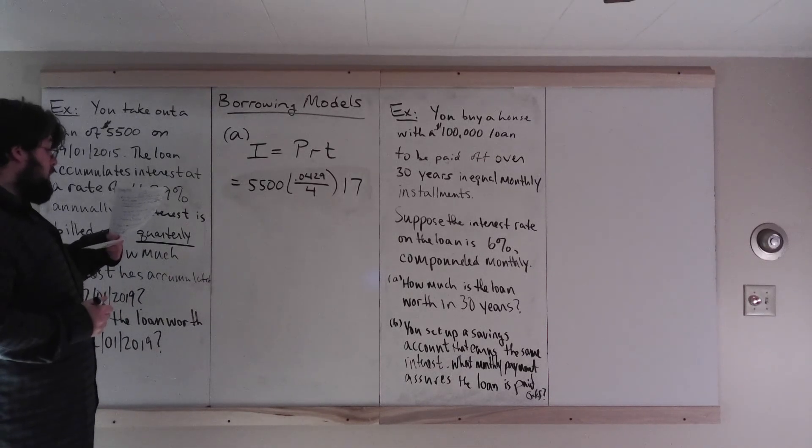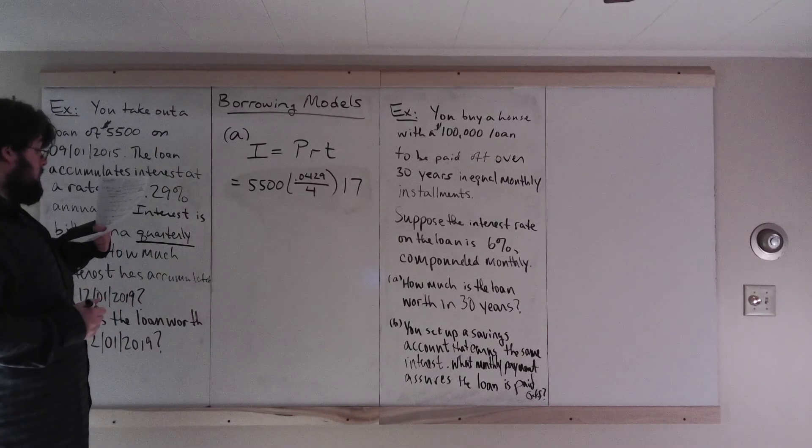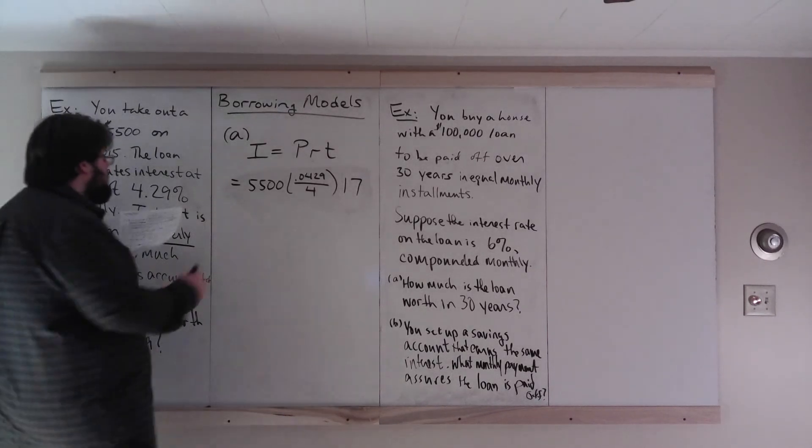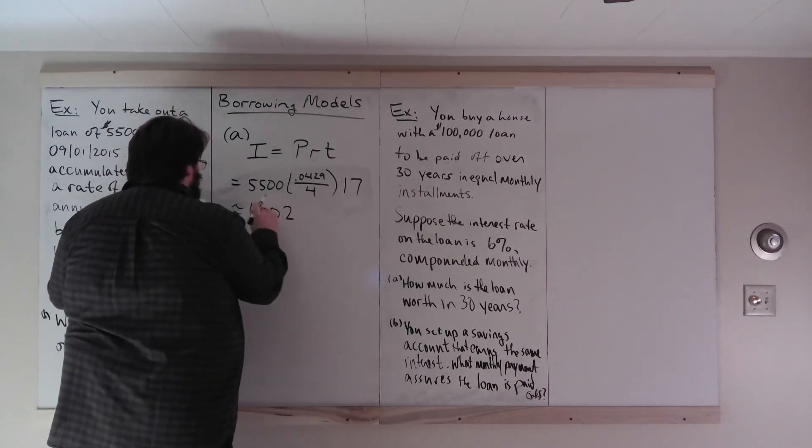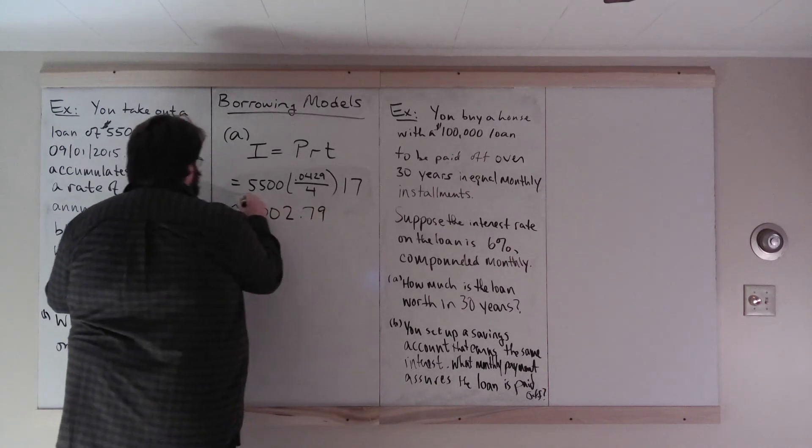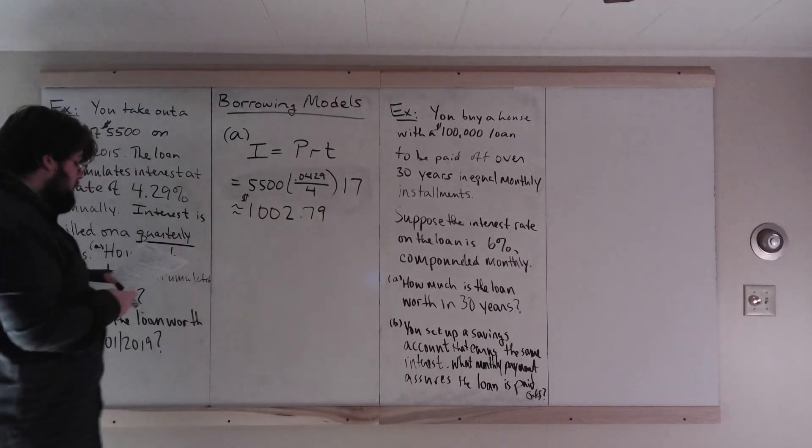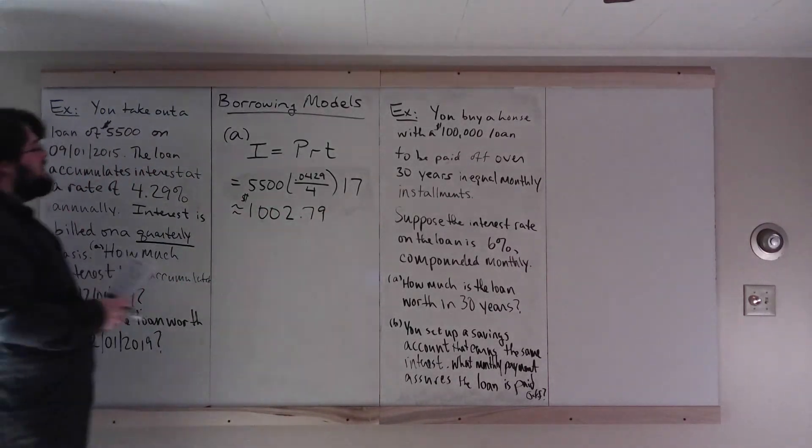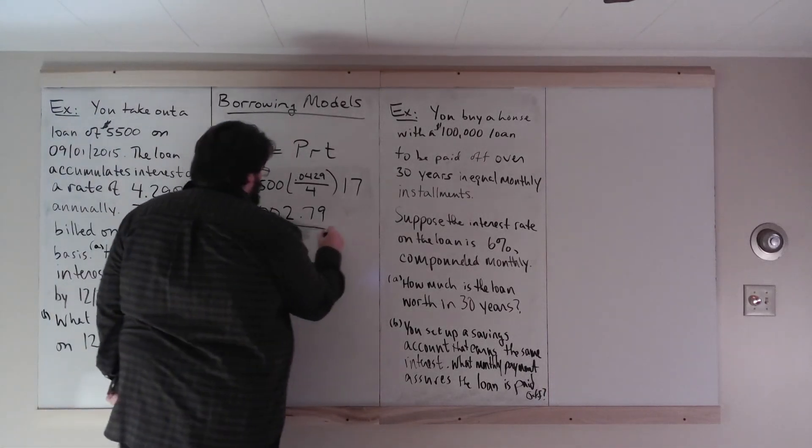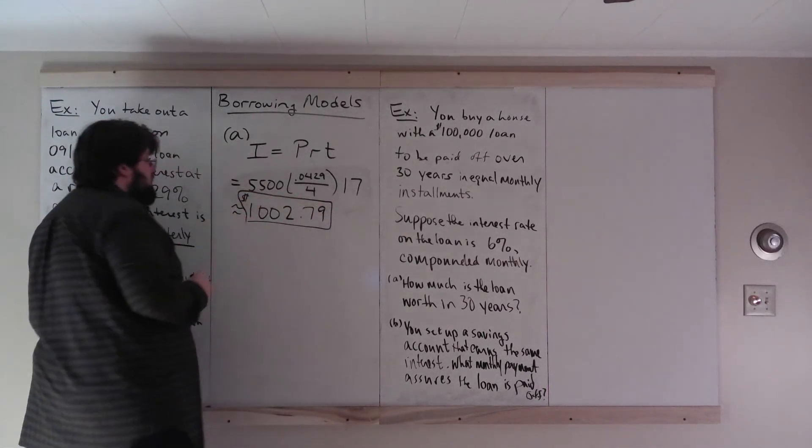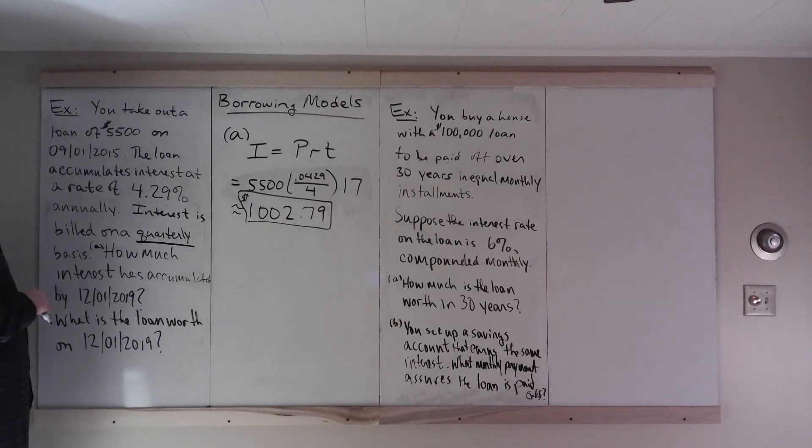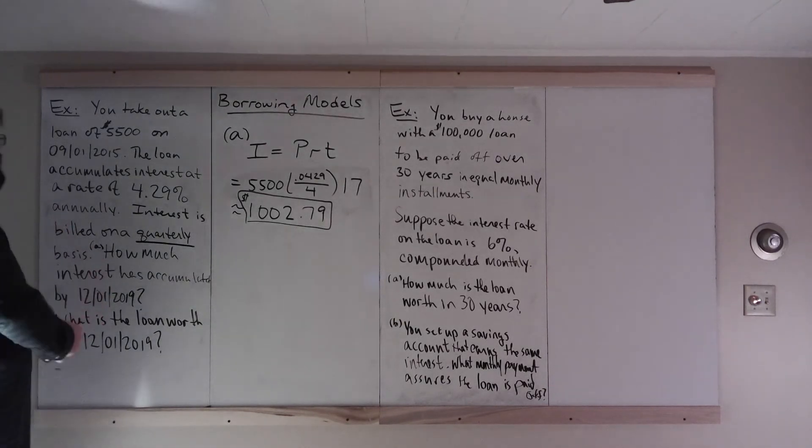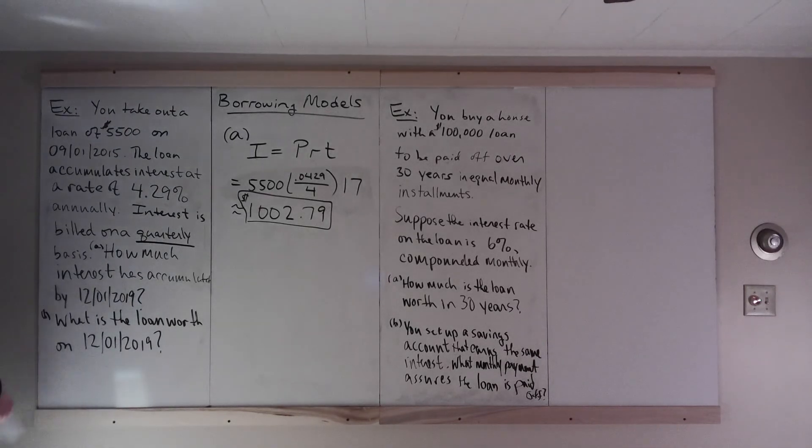Then you multiply these numbers together. And what do you get? You get approximately $1,002.79. So in 51 months, 17 quarters, 4 and a quarter years, it accumulated $1,000 in interest.